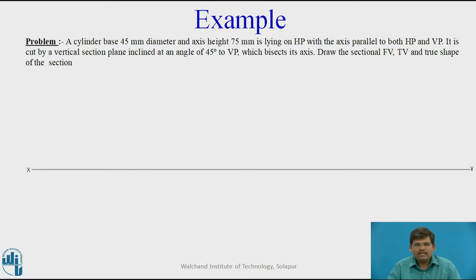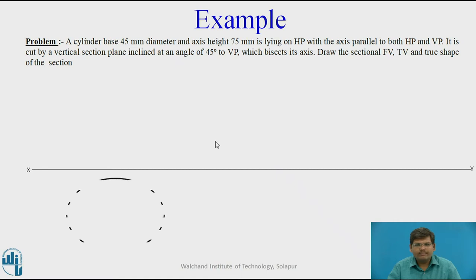Let us proceed with the drawing. Draw the XY line, which is our reference line. Now as the cylinder is lying on HP with the axis parallel to both HP and VP, we decide the first condition as the cylinder is totally lying with its axis on HP — that is, it is kept vertically on HP and its axis is parallel to VP and perpendicular to HP. So in this case, the top view of the cylinder will be a circle of diameter 45mm. Let us draw a circle in the top view of 45mm. This is the top view of the cylinder.